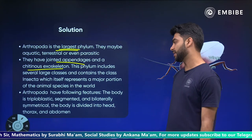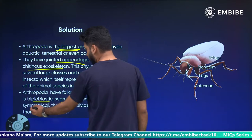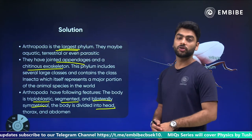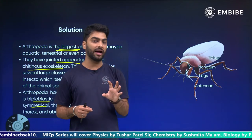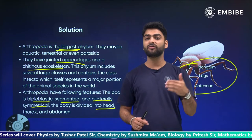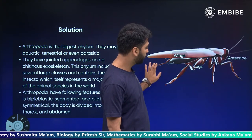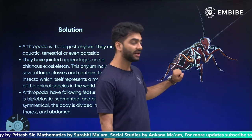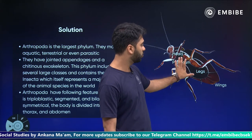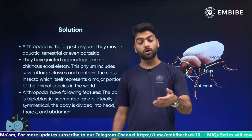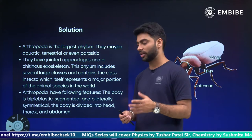Arthropoda is the largest phylum having an exoskeleton. They may be aquatic, terrestrial or parasitic. They have jointed appendages and a chitinous exoskeleton. The class Insecta represents a major portion of animal species in the world. Arthropods are triploblastic, segmented, bilaterally symmetrical; body is divided into head, thorax and abdomen. The main characteristic of arthropods is jointed appendages. Examples include cockroach — which has three pairs of legs, compound eyes, antenna, head, thorax and abdomen — as well as ant and spider.